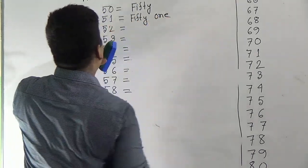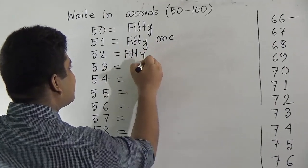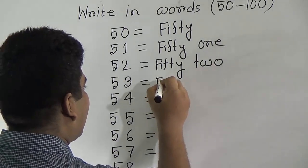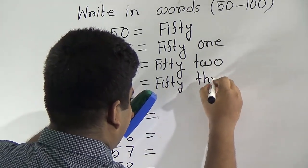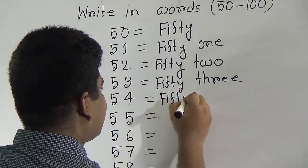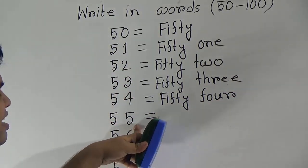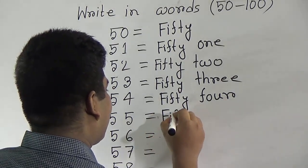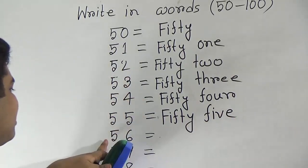So write 50: F-I-F-T-Y. And this is 2, so we write 52: fifty-two. Then fifty — F-I-F-T-Y — and this is 3, so we write here T-H-R-E-E. 54: F-I-F-T-Y, F-O-U-R. 54 and this is 55 — it is an interesting number because both digits are 5. So we write F-I-F-T-Y. Then 56: so we write F-I-F-T-Y.